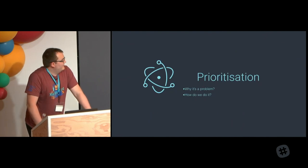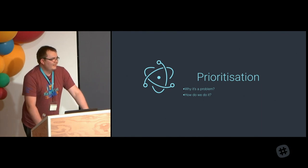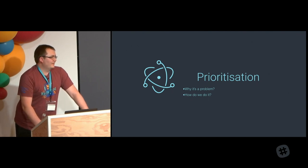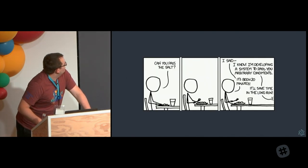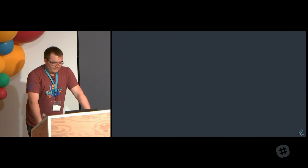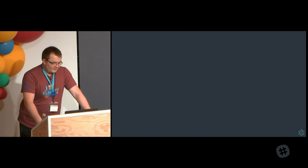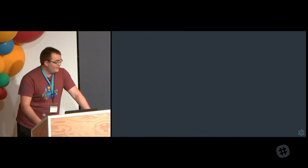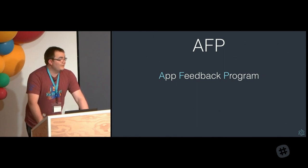Next up: prioritization. This isn't a problem unique to Electron — all development teams struggle with this. What should I do? When should I do it? How exactly should I solve a problem? We have to manage this across different companies: Slack, GitHub, Microsoft, Atlassian, and a whole bunch of others pitching in. To help with this issue and to remain objective while fixing bugs and solving problems, we have the AFP — the app feedback program — for companies and apps using Electron to help us test out betas, find bugs, and prioritize what bugs and features we deal with on a week-to-week basis.